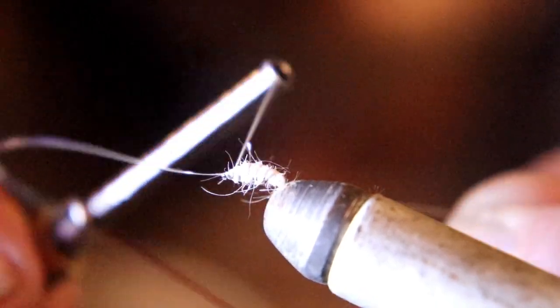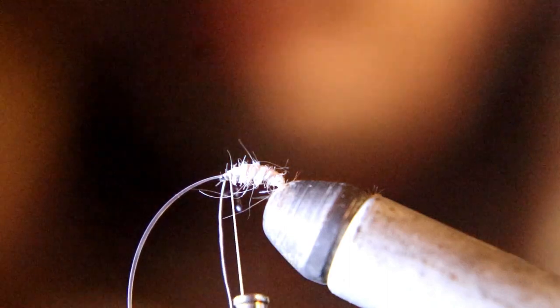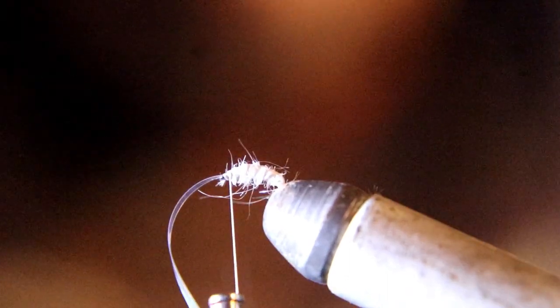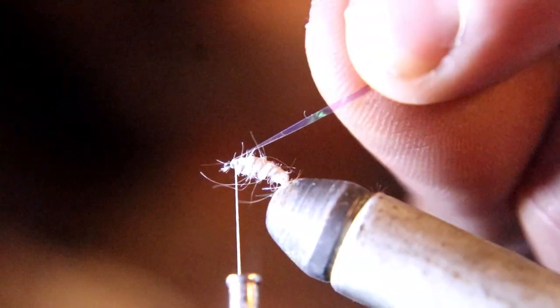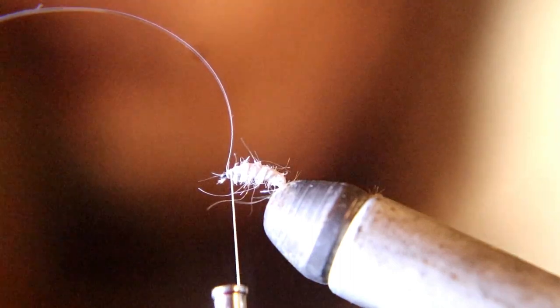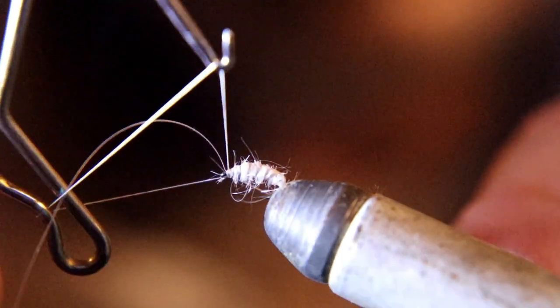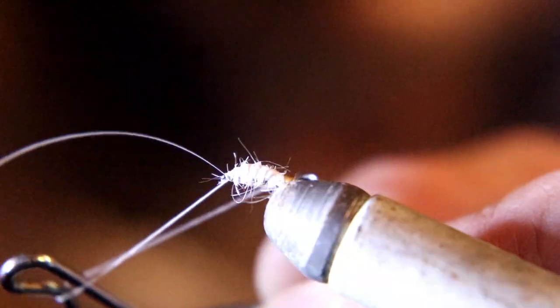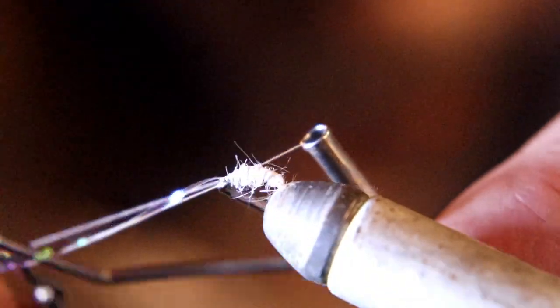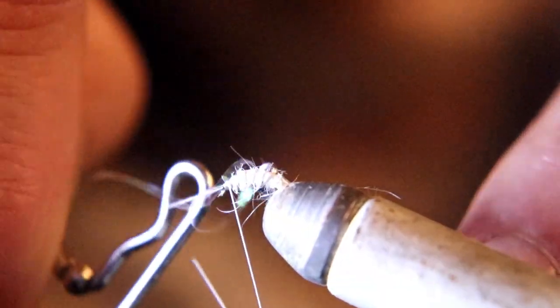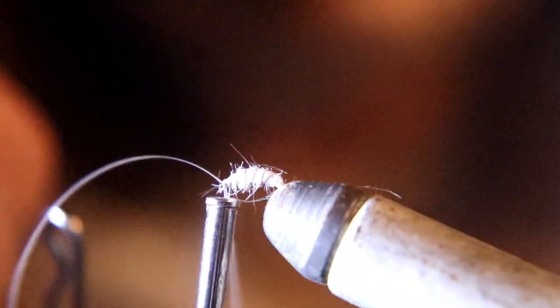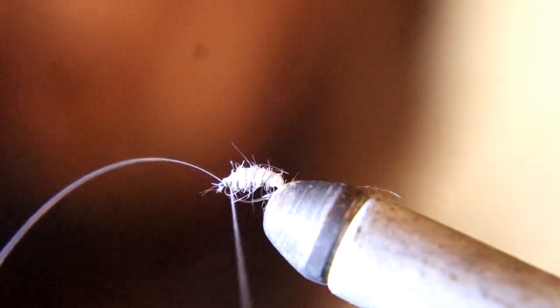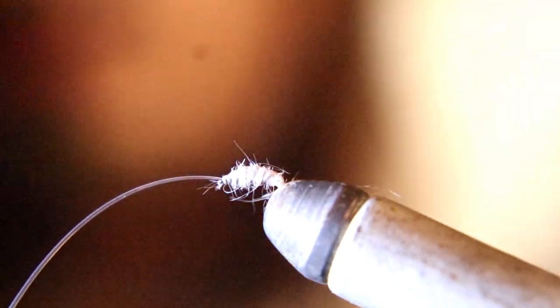Secure it down and then cut it off. I try to be careful how many thread wraps I put in here. You don't want to make the head of this thing just a big ball of thread. So add a couple whip finishes—I usually put about three in—tighten it up, and cut off your tying thread.